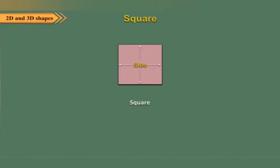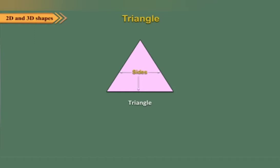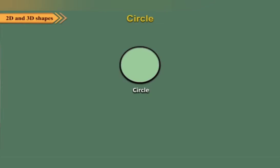A square has four sides; all sides of a square are equal, and it has four vertices. A rectangle has four sides; the opposite sides of a rectangle are equal, and it has four vertices. A triangle has three sides and three vertices or corners. A circle has no vertex; it is a closed loop and can be traced with a one-rupee coin, carom coins, etc.